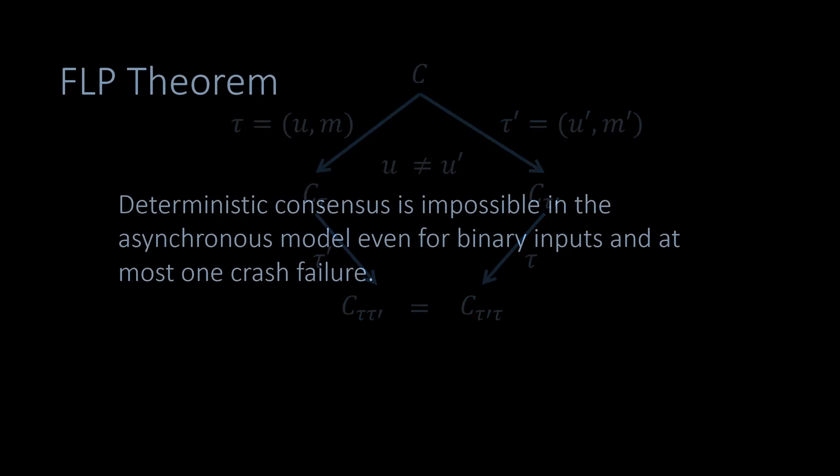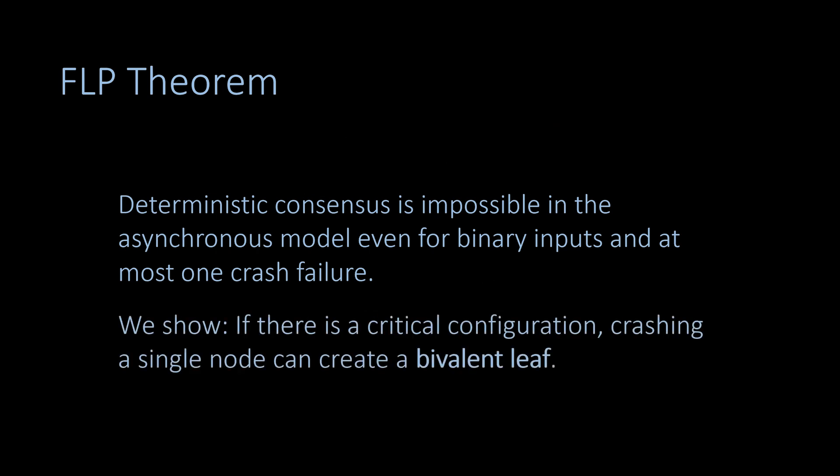We are now ready to prove the main theorem. What we actually show is that a single node crash in a critical configuration can create a bivalent leaf. Since it is a leaf, there are no messages left to process, so either the algorithm stays in this state without terminating, or the nodes decide but then may not agree on a value because the configuration is bivalent. So, showing that we can create a bivalent leaf proves the theorem.